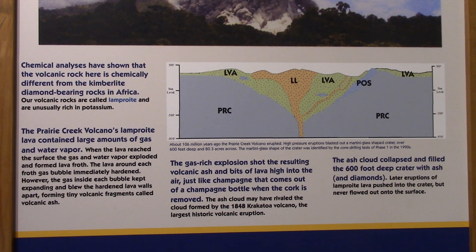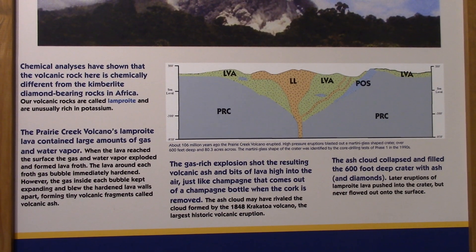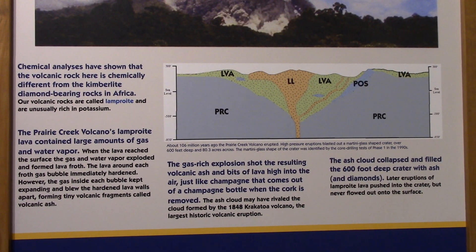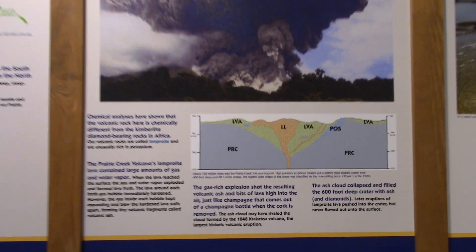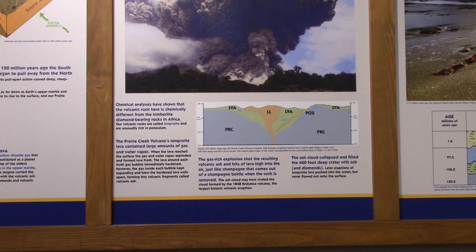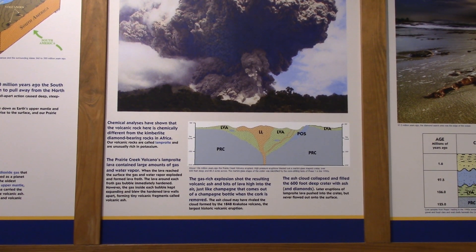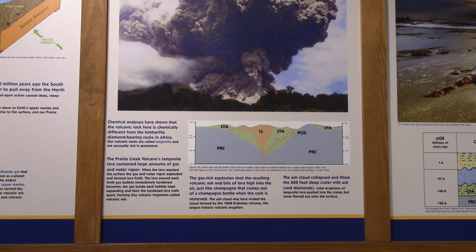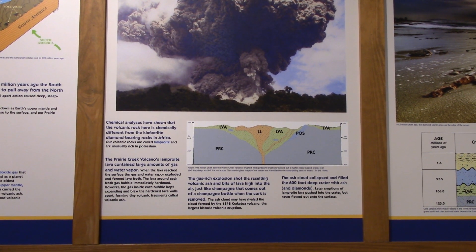The lava around each froth gas bubble immediately hardened. However, the gas inside each bubble kept expanding and blew the hardened lava walls apart, forming tiny volcanic fragments called volcanic ash. The gas-rich explosion shot the resulting volcanic ash and bits of lava high into the air, just like champagne that comes out of a bottle when the cork is removed. The ash cloud may have rivaled the cloud formed by the 1848 Krakatoa volcano, the largest historic volcanic eruption.